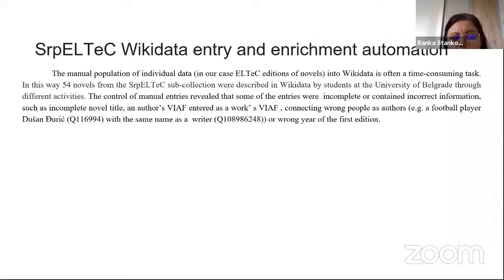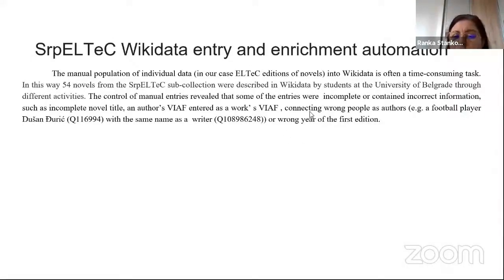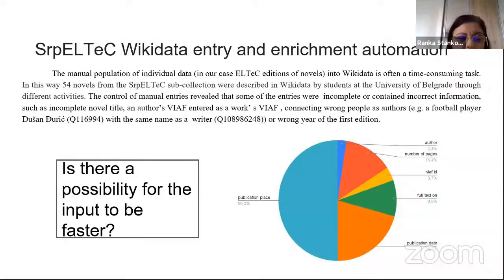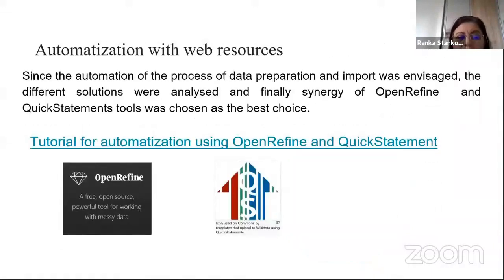The control of manual entries revealed a lot of missing and incomplete data. Some VIAF identifiers were wrongly connected because students didn't distinguish between VIAF for authors and for novels. Also, for example, instead of Dusan Djuric as a writer, they put Dusan Djuric as a football player, and similar errors. Our idea was to automate this procedure, enrich the data, and make input faster.